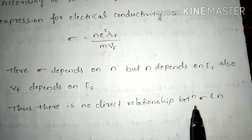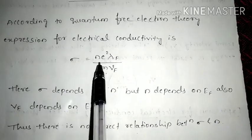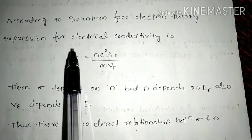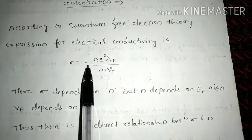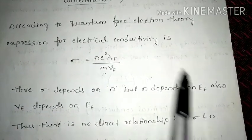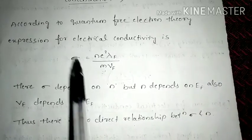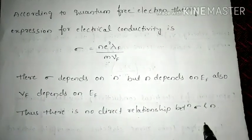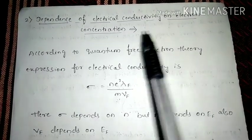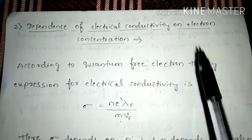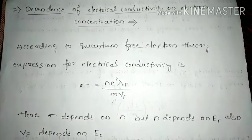Thus, there is no direct relationship between σ and n. In classical mechanics, σ is directly proportional to n, so as n increases, σ should increase. But quantum theory explains that σ depends not only on n but also on Vf and Ef, so conductivity does not simply increase as the number of free electrons increases. This completes the quantum free electron theory. Thank you.